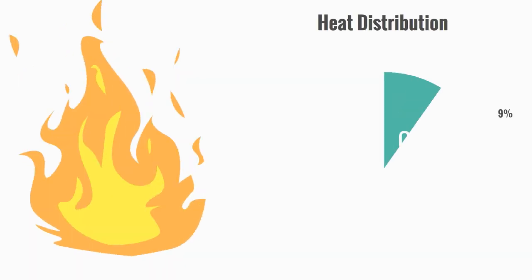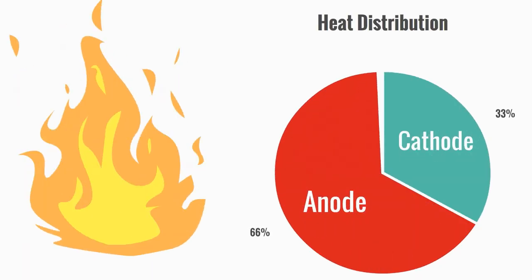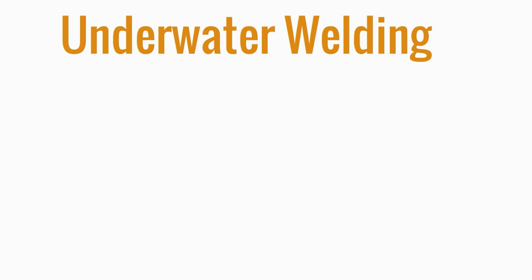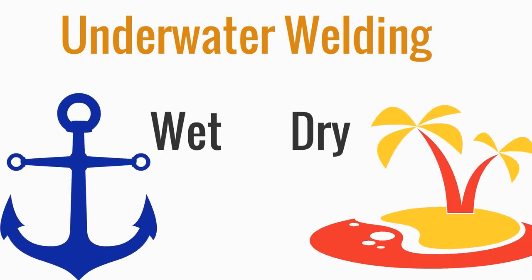This all provides a systematic movement of heat distribution, with about one-third going toward the cathode and two-thirds going toward the anode. It's important to remember that underwater welding comes in two forms, wet and dry.